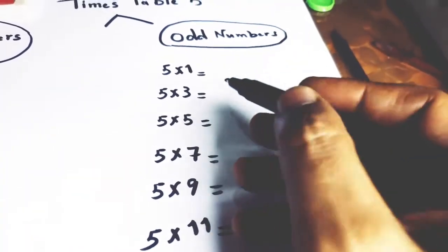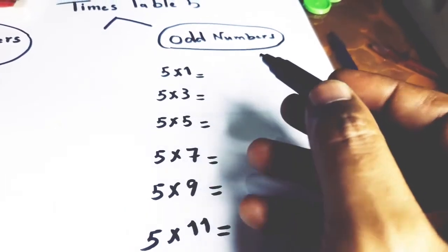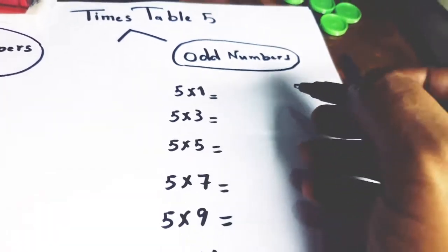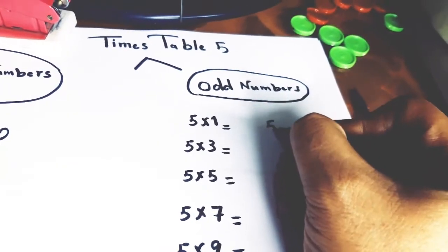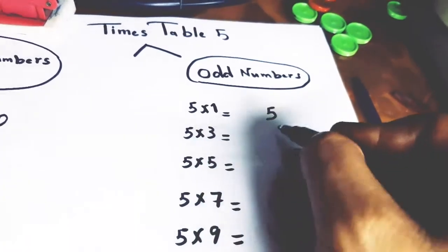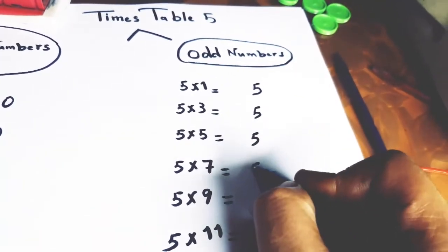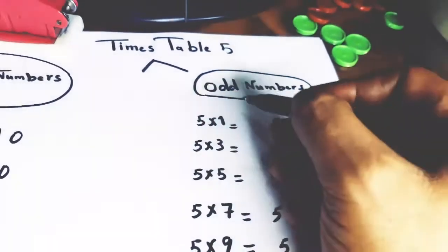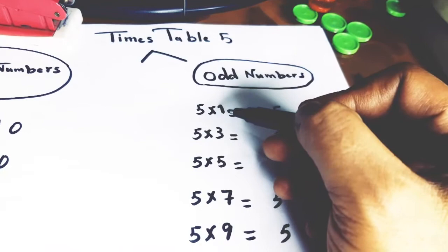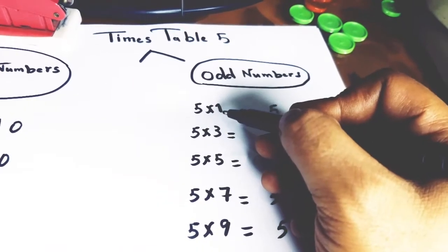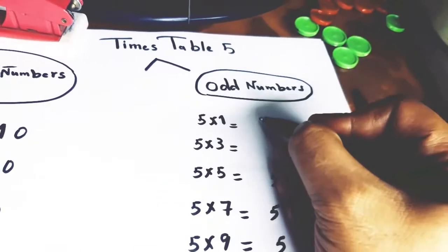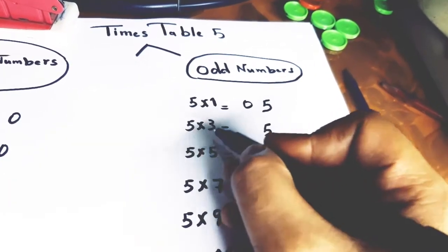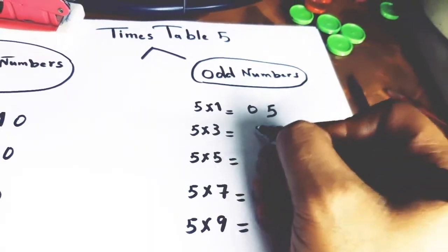What about the multiplication of 5 by odd numbers? We must know an important fact: when we multiply 5 by an odd number, we place 5 at the one's digit. Then we subtract 1 from the odd number — subtract 1 from 1 gives 0, subtract 1 from 3 gives 2 — then divide by 2: 2 ÷ 2 = 1.